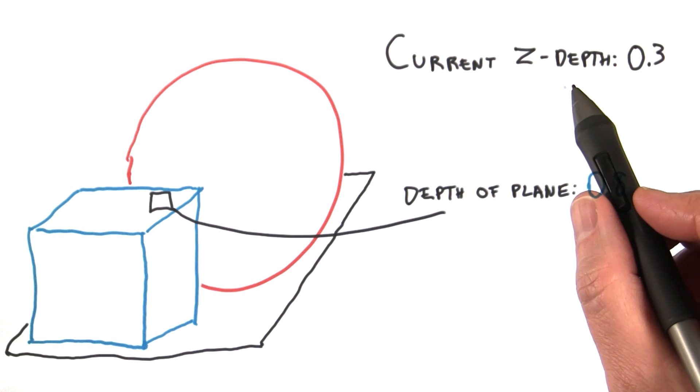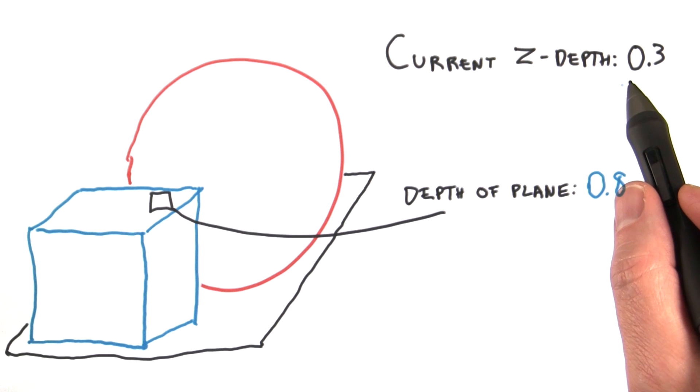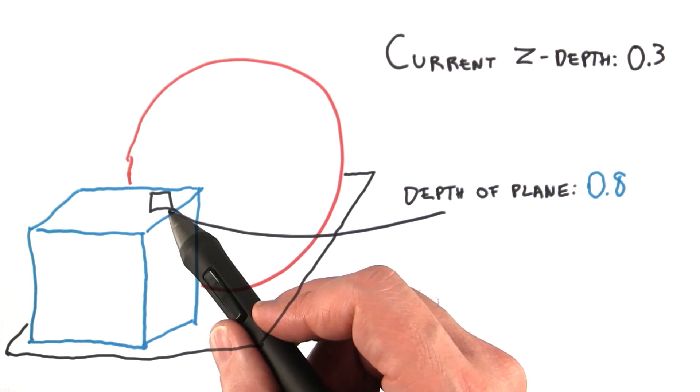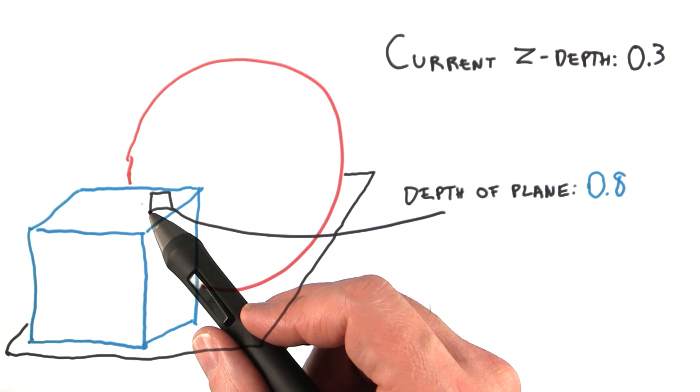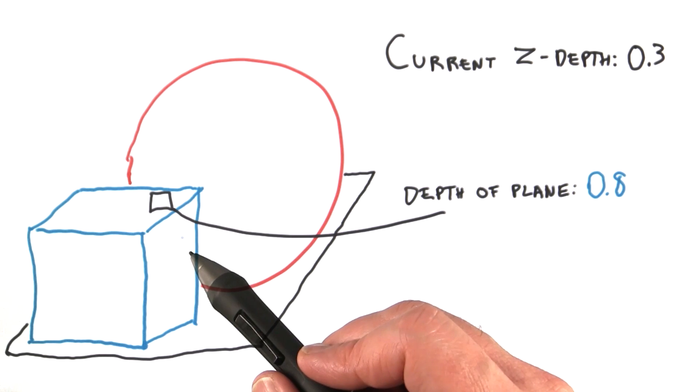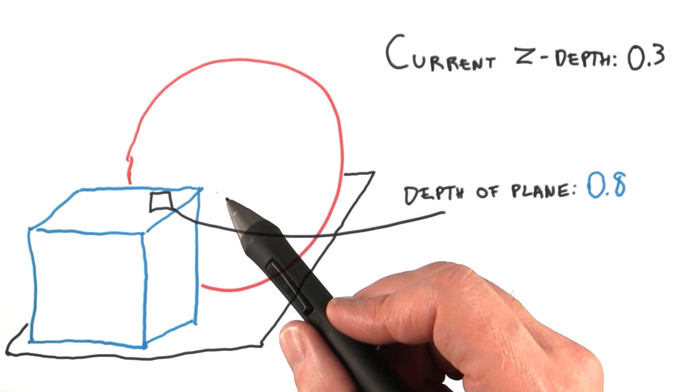The final conclusion of this process is that the current z-depth stays at 0.3, and the color that's stored at the pixel, this blue cube, is indeed the color that gets displayed on the screen. By storing a depth at each pixel, the GPU can mindlessly keep track of what object is closest at any given moment.